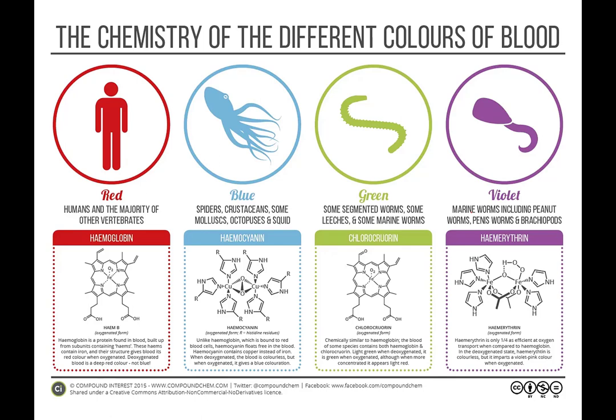There's a nice infographic from Compound Chem showing different blood types across species. Most vertebrates have hemoglobin; spiders, crustaceans, and mollusks have hemocyanin; worms and leeches have chlorochrorin; and some marine worms such as peanut worms have hemerythrin, which is a violet color. Not all blood is red.